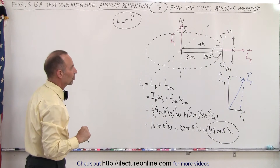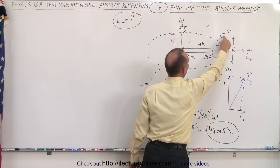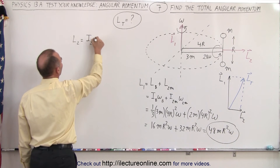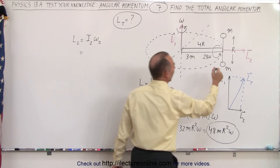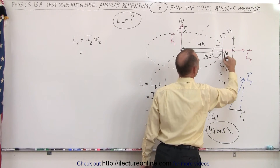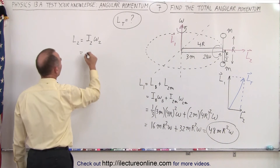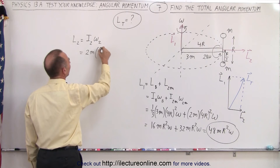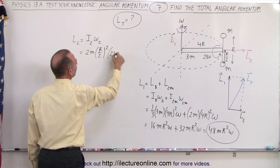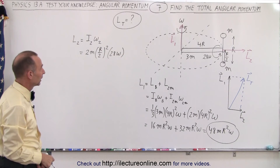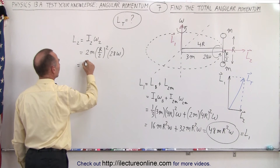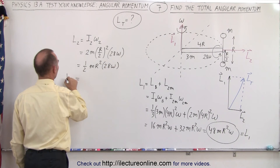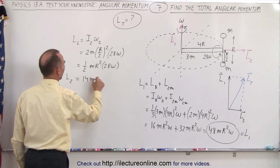Now we need to find the angular momentum vector of the two masses rotating at 28 omega. So L2 is equal to I2 times omega2. I2 is two masses each at a distance of R/2 from the point of rotation. So we have 2M times (R/2)² times omega, where the angular velocity is 28 omega. That equals 2 times one-quarter MR² times 28 omega, which is one-half MR² times 28 omega, giving L2 equal to 14MR²ω.